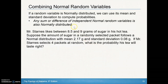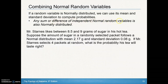Now let's look at a problem. If a random variable is normally distributed — remember to draw that graph and shade — we can use its mean and standard deviation to compute probabilities. Any sum or difference of independent normal random variables is also normally distributed. So if two individual distributions are each normally distributed, their sum or difference will also be normally distributed.